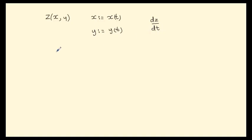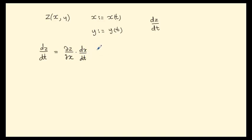In the discussion which followed, we arrived at the fact that the ordinary derivative of z with respect to t would be the partial derivative of z with respect to x, multiplied by the ordinary derivative of x with respect to t, plus the partial derivative of z with respect to y, multiplied by the ordinary derivative of y with respect to t.